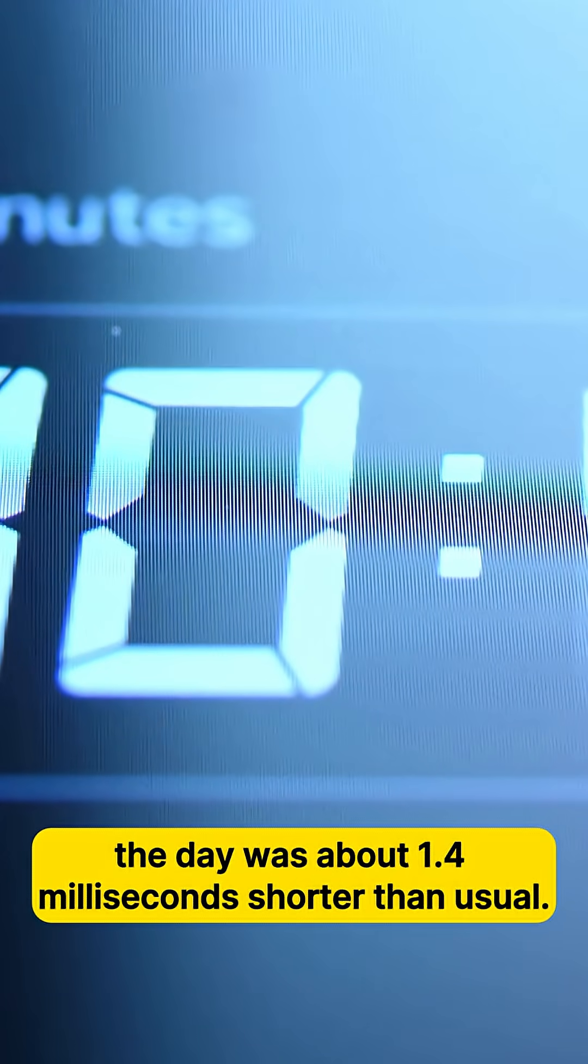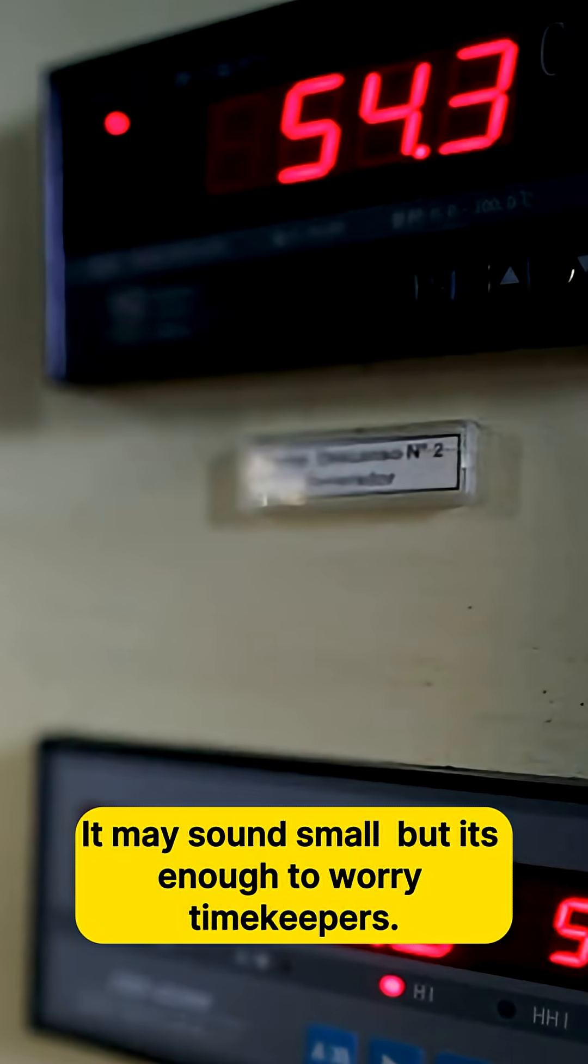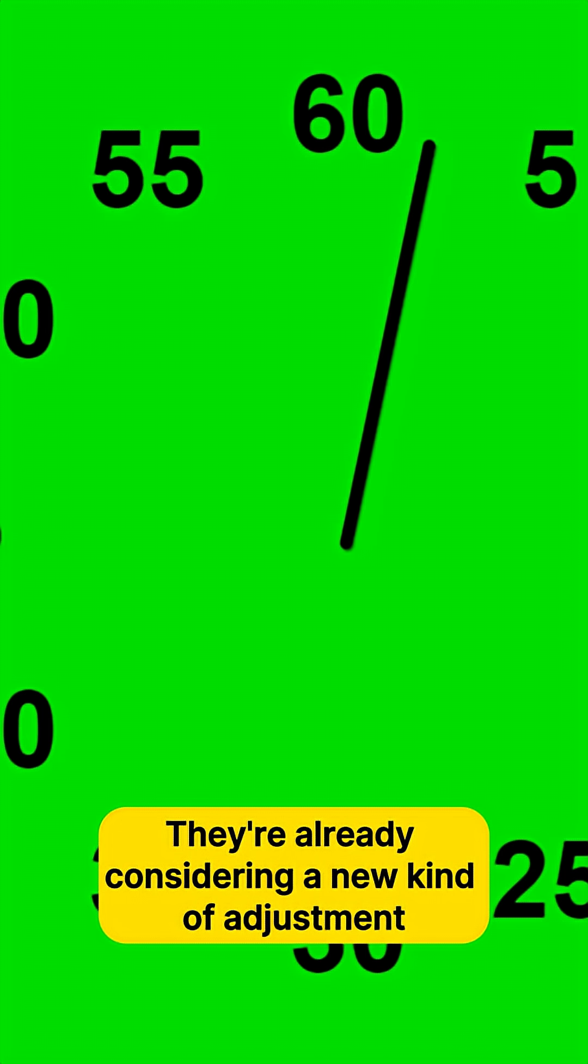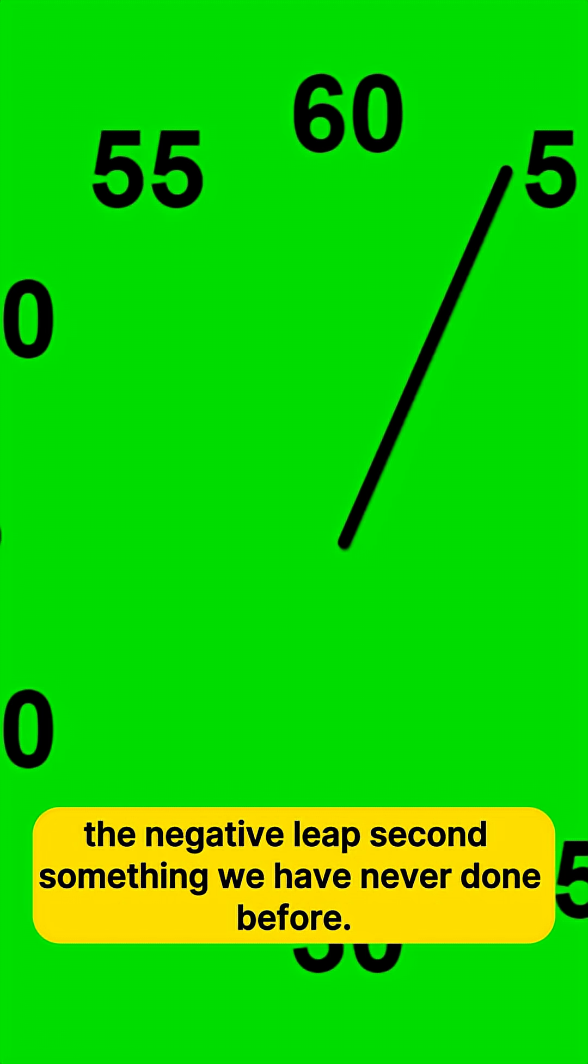The result? On July 9th, the day was about 1.4 milliseconds shorter than usual. It may sound small, but it's enough to worry timekeepers. They're already considering a new kind of adjustment, the negative leap second, something we've never done before.